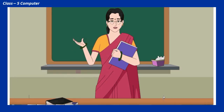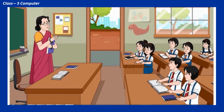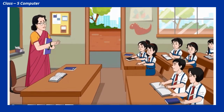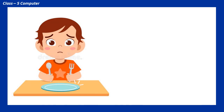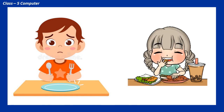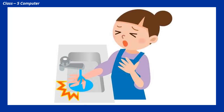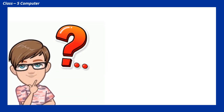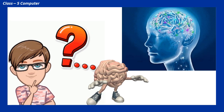Before starting our today's session, let us discuss some things. As human beings, we all know how to perform our day-to-day activities and how to react in certain situations. For example, when we feel hungry, we eat. When we get tired of walking, we sit down. When we touch something extremely hot, we immediately remove our hand. Have you ever thought, how do we know what to do in these situations? It is the brain that gives us the instructions to act and react in this manner.